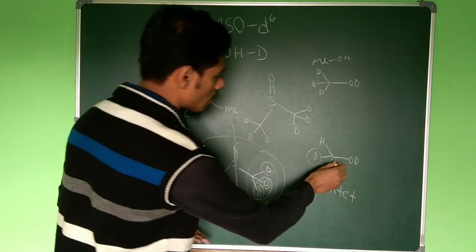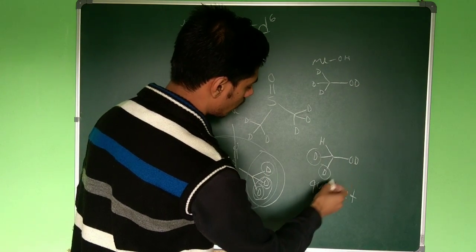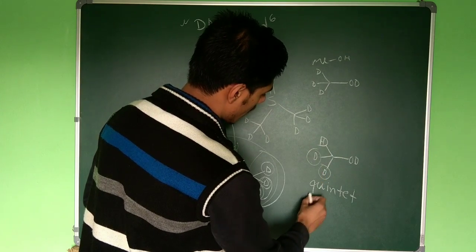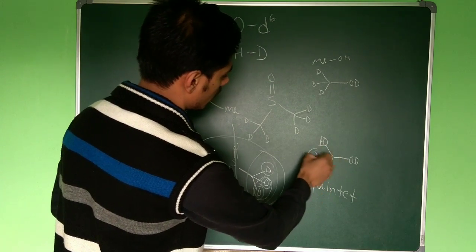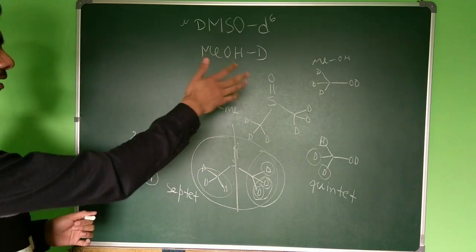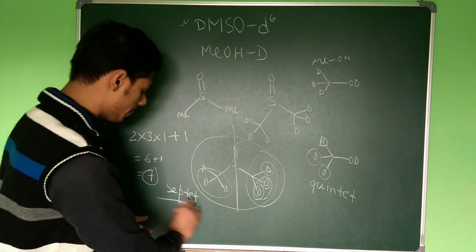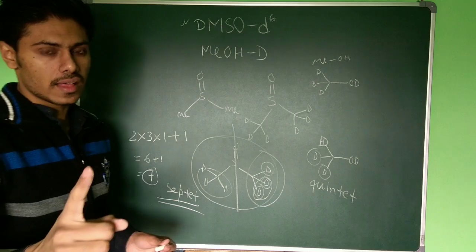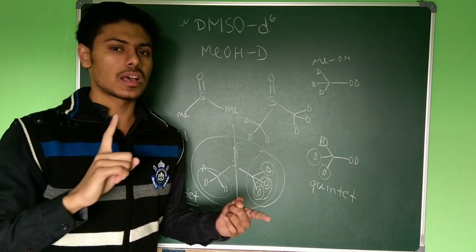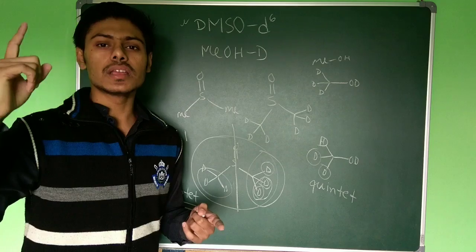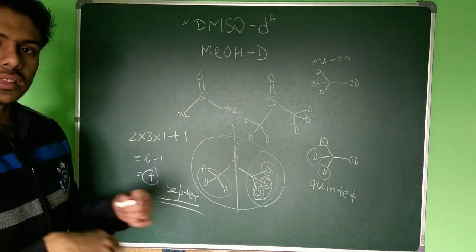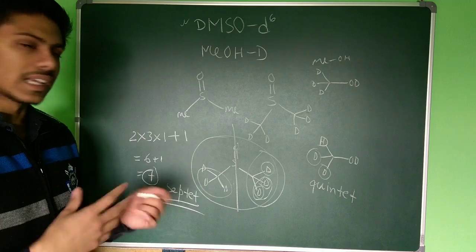And the similar is the case of methanol-D because here also you have to consider this one deuterium, and here again you have N-value 3. So both in case of DMSO-D6 and in case of methanol-D you will have a septet signal for the C13 NMR. So for C13 NMR it is septet and for H1 NMR it will be quintet. So this is very important and this is how the signal or the splitting comes.